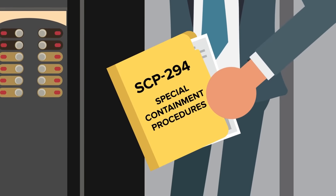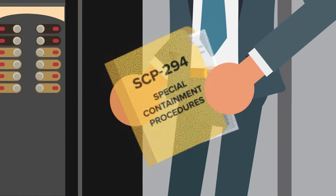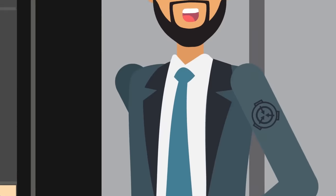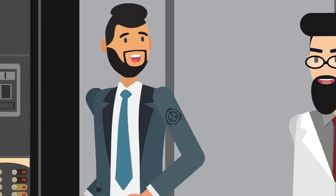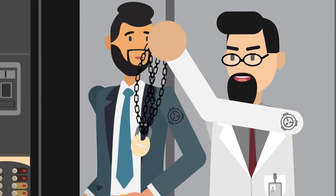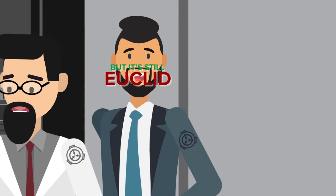The special containment procedures paint an interesting picture. By which we mean, there aren't any. SCP-294 doesn't need any special procedures, secret rituals, or complex machines to keep it contained. But it's still Euclid.